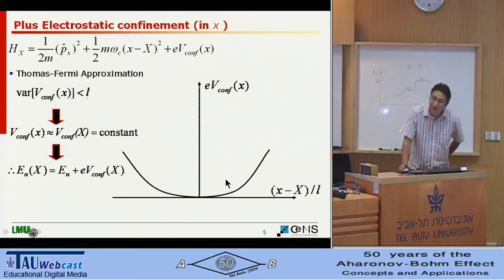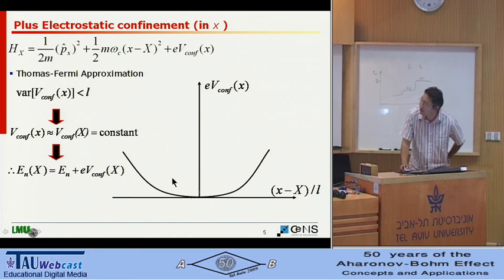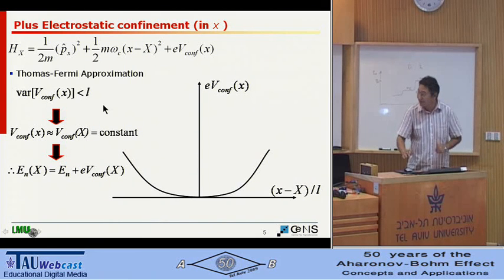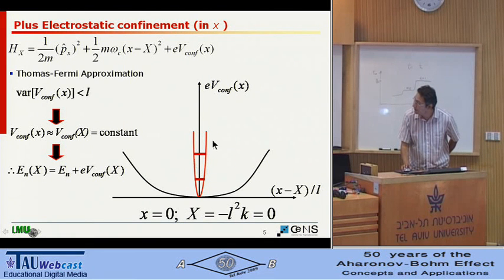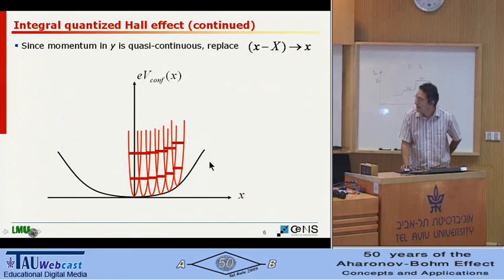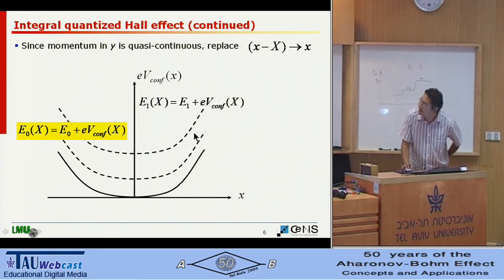As a first approximation, you can add a confinement potential and do the Thomas-Fermi approximation, assuming that the confined potential is changing slowly on the length scale of the magnetic length, which is essentially the extent of the wave function. Then for a certain momentum you can place your confinement, giving the first and second Landau levels. If you have many of them, you can approximate the momentum as quasi-continuous and say that now you have Landau levels in space.